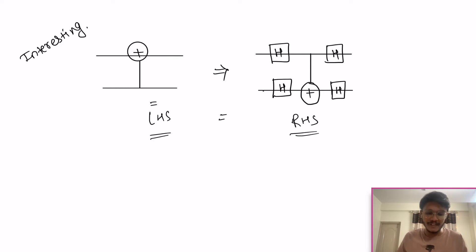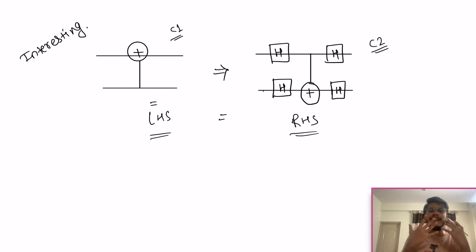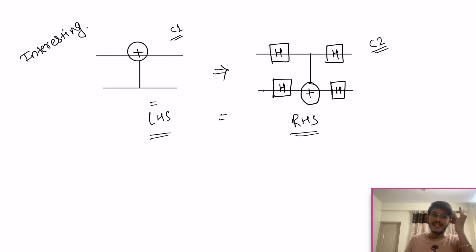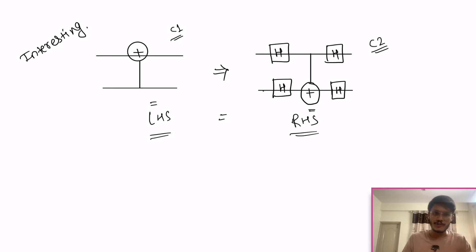We need to prove this circuit equality — LHS equals RHS. Let's call these circuit one and circuit two. These two circuits are equivalent and both demonstrate phase kickback. By looking at this circuit, you should get the intuition: the CNOT gate has Hadamard gates preceding it, so the previous outputs will be in equal superposition states, and applying the CNOT gate on top will cause phase kickback for sure.